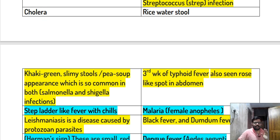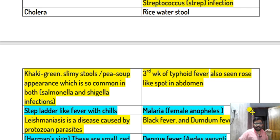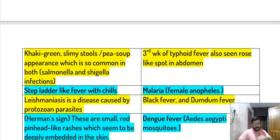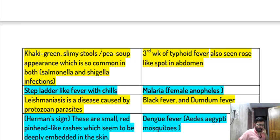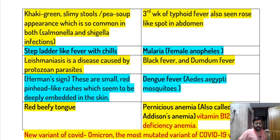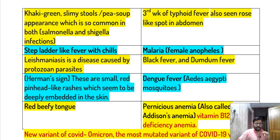Typhoid fever is caused by Salmonella. Rose-like spots on the abdomen are seen in the third week of typhoid fever. Step-ladder fever is characteristic of typhoid. Malaria is caused by the female Anopheles mosquito and is characterized by shivering. Hermanside spots are small red pinhead-like rashes that appear deeply embedded in the skin.